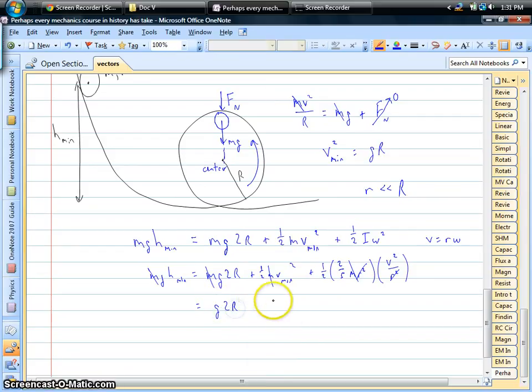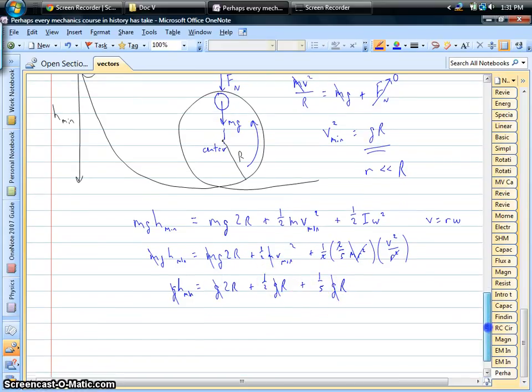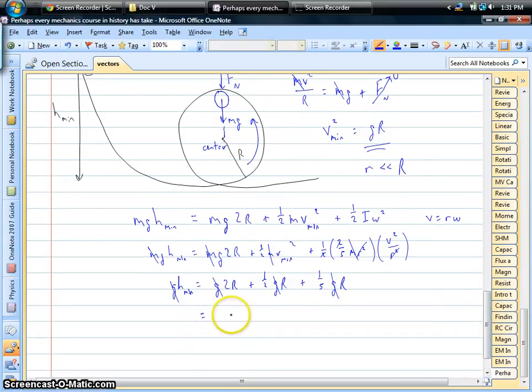And we can simplify a little bit. Acceleration of gravity times twice the radius. We have one-half. Now, here's the minimum speed squared is the acceleration of gravity multiplied by the radius. If I can put that in. Let's see, now here, one-half times two-fifths is one-fifth. Then we have the minimum speed squared, which again is going to be acceleration of gravity times the radius of the loop. It looks like a factor of acceleration of gravity drops out. And let's simplify this even more.